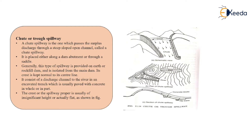It can be placed either along the dam abutments which are located on the steep slope area. So if we have such type of topography, we can adopt this chute or trough spillway type. This is generally adopted for earth and rockfill dams only, and it is isolated from the main dam. It is not constructed within the body of the dam — it will be located further from the distance of the dam structure, as you can see in this diagram. Generally, its crest is kept normal to its center line. It consists of a discharge channel to the river in an excavated trench, which is usually paved with concrete wholly or in part.